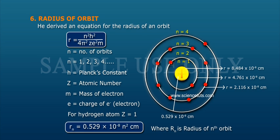For hydrogen atom, Z = 1. Rₙ = 0.529 × 10⁻⁸ n² centimeters, where Rₙ is the radius of the nth orbit.